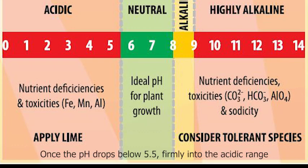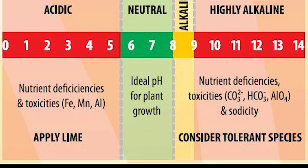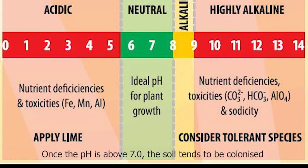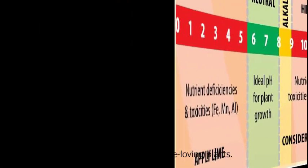Once the pH drops below 5.5, firmly into the acidic range, there is only a limited range of plants that like this level of acidity and can tolerate these acidic conditions. Once the pH is above 7.0, the soil tends to be colonized by a limited range of lime-loving plants.